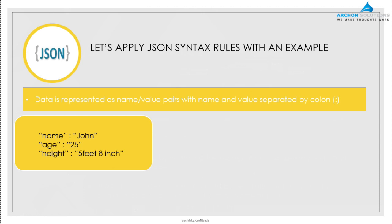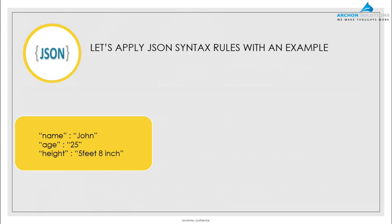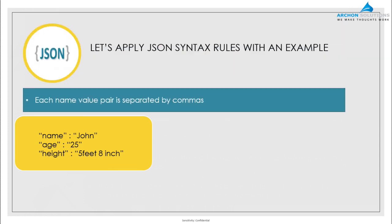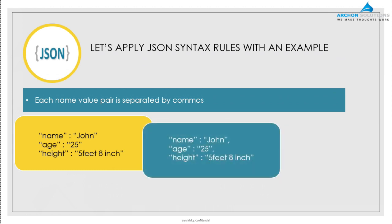Now rule two: each name-value pair is separated by commas. So the first value which is the name, the second which is the age, and the last which is the height are each separated by commas.